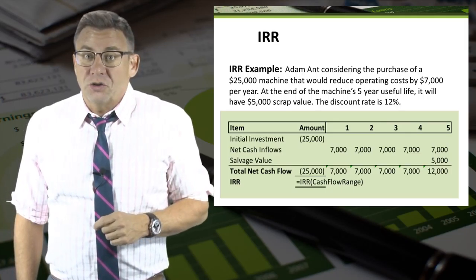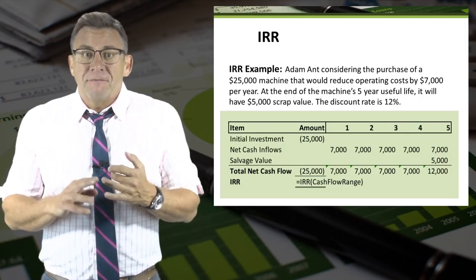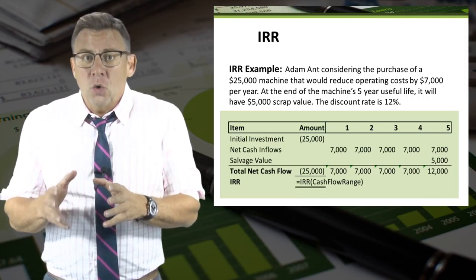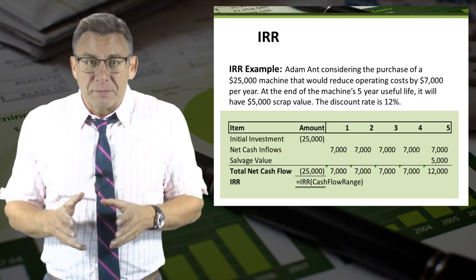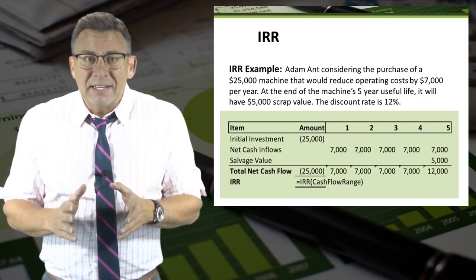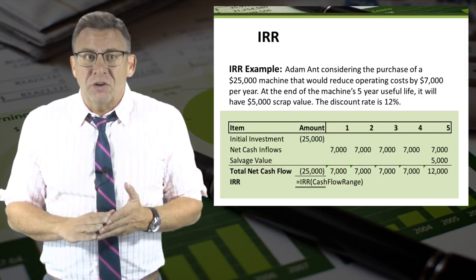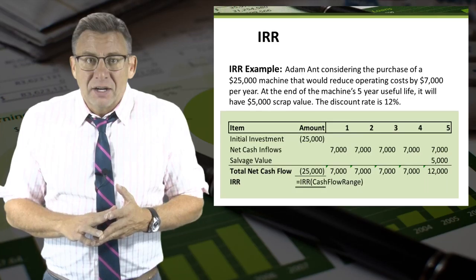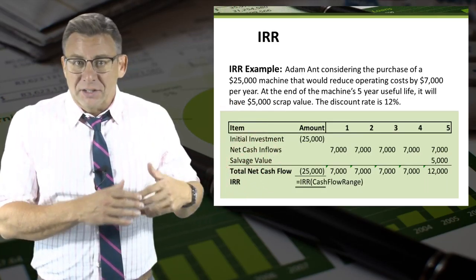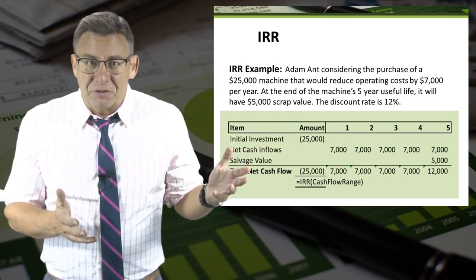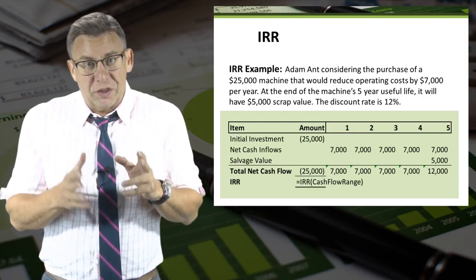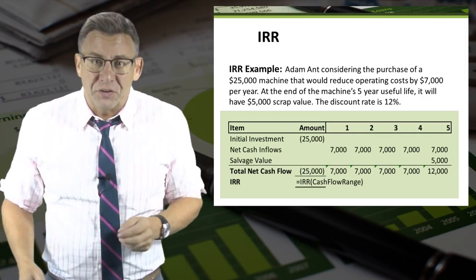Two things to remember in order to solve this correctly. First, make sure the initial cash outflow is negative — there is no way to determine the return on investment if all the numbers are positive. Second, the order of cash flows in the range must be correct. For example, had I not netted the year five numbers together and added a sixth year for the salvage value, I would get an incorrect IRR because the solution would think that happened in year six rather than year five.